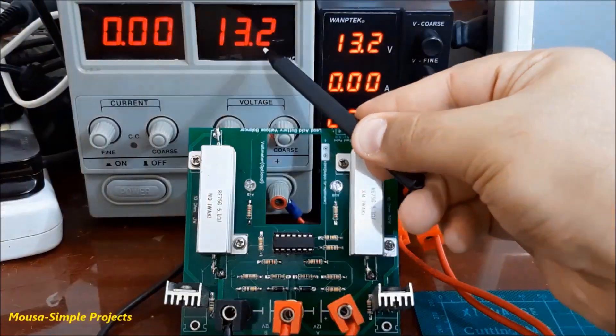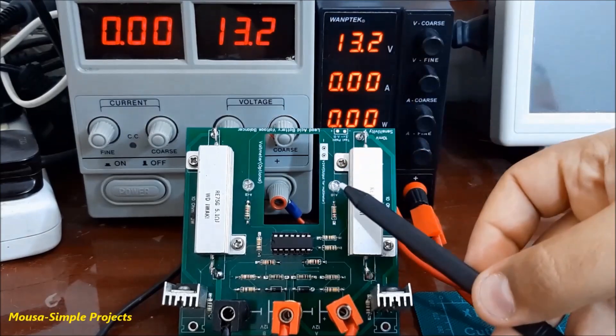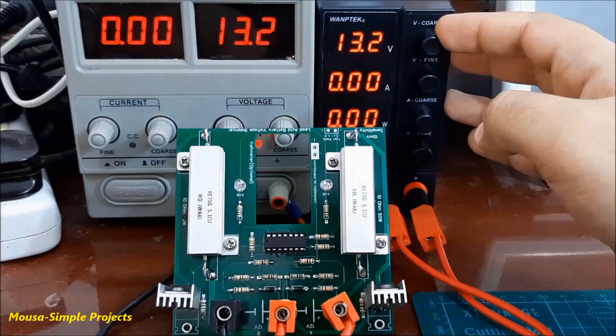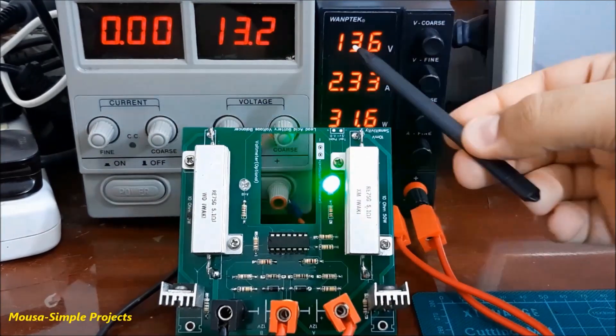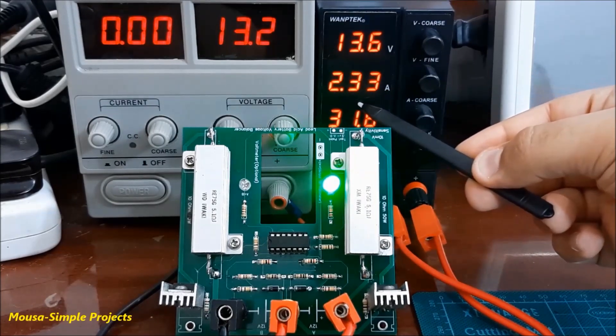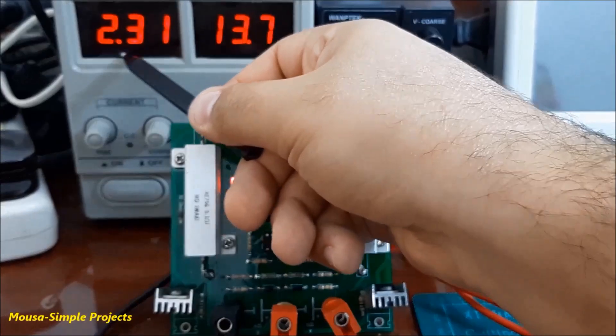When the voltage of both power supplies are exactly the same, nothing happens. But when I increase the voltage of one of them, this circuit starts drawing current to discharge it. So the circuit is working well.